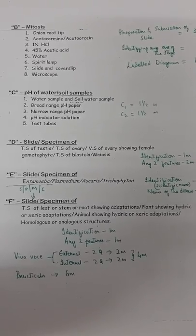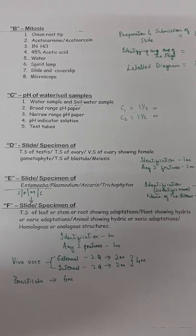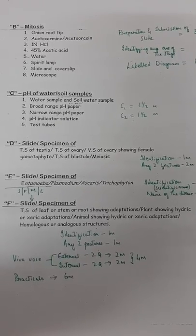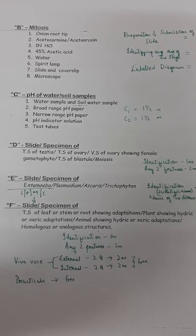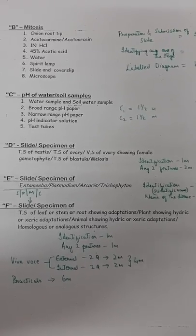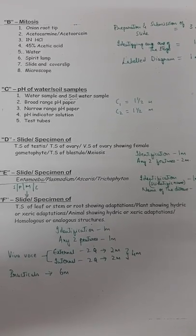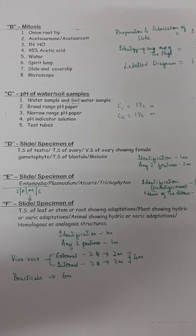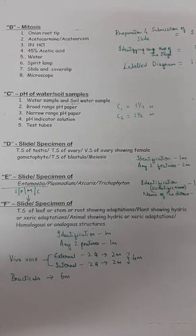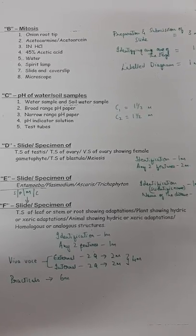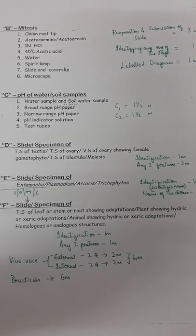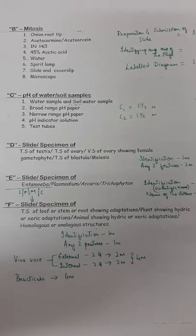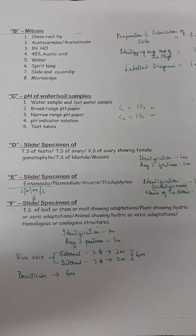Question D has a permanent slide or specimen displayed. Identifying the given slide or specimen correctly gets one mark, and writing any two salient features gets two marks. The slide might be transverse section of testis, transverse section of ovary, vertical section of ovary showing female gametophyte, transverse section of blastula, or meiosis.